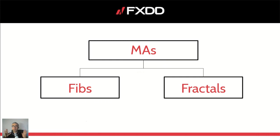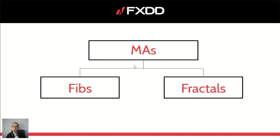I also use fractals, because if fractals occur in the zone where I'm expecting support or resistance, that means a couple of candles have already bounced — a fractal only appears when a candle doesn't have a lower low or higher high. If there are continuous higher highs and lower lows, there's no fractal. So a fractal means price is responding to some level. And of course fibs — fib retracements, fib targets, fib sequence levels — very strong levels, highly respected by the market.